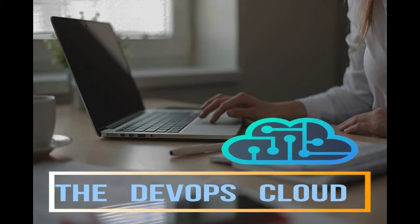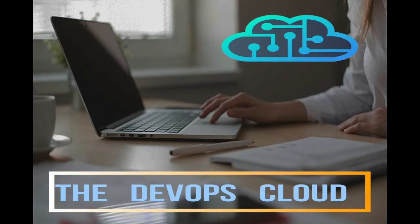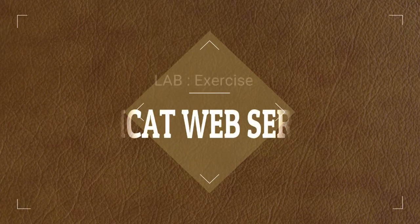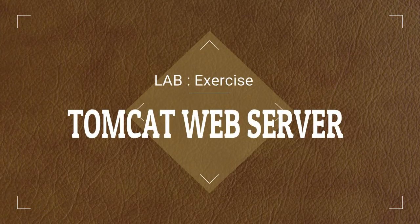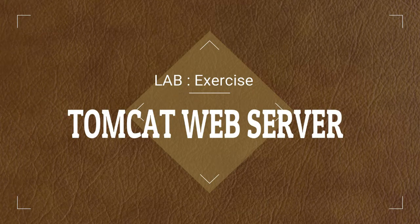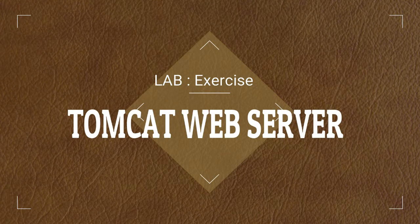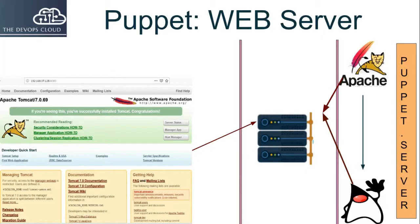Hello Puppet fans, and welcome to this lecture. In this lab exercise we will understand the prerequisites to automate the configuration of the web server through Java and Tomcat module. In this lab exercise we need to create a Tomcat web server, so we need to automate the process of creating a Tomcat web server by using Puppet resources.